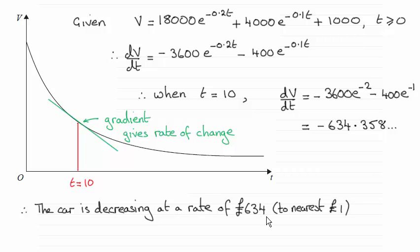Well, being a rate of change, we need to work out what dV/dt is. Okay, first of all, that will give us our general rate of change. And then we're looking for what value we get when t equals 10.